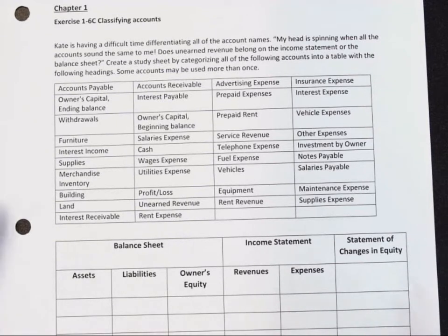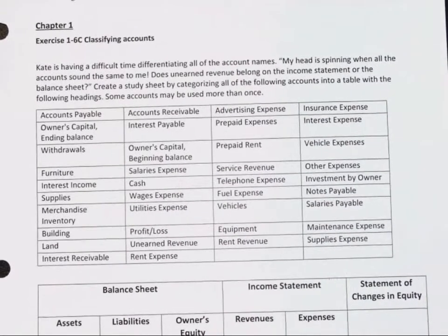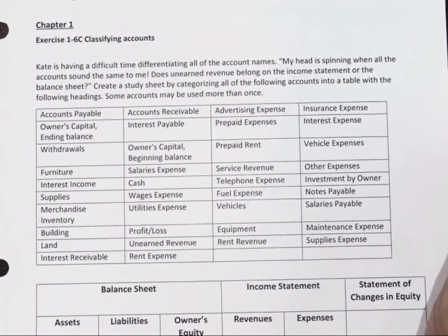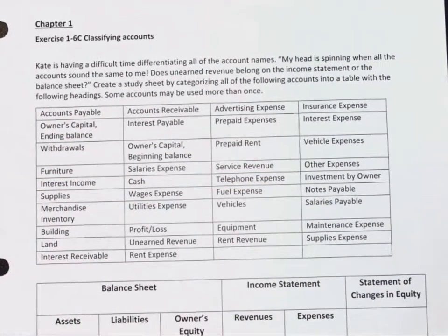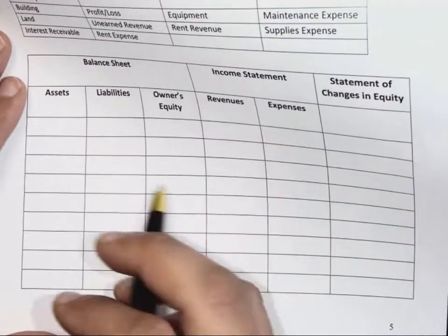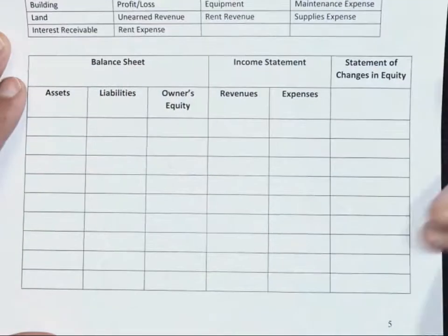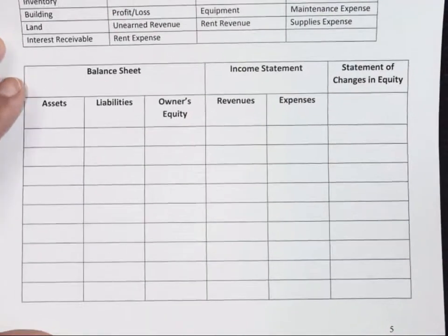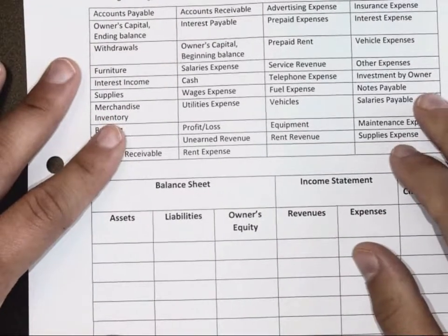Kate is having a difficult time differentiating all of the account names. Her head is spinning when all of the accounts sound the same. The task is to create a study sheet by categorizing accounts into a table. We'll go through all of these accounts and put them in their respective spots. Remember we talked about the five different categories of accounts — we have three different financial statements and five different account types.